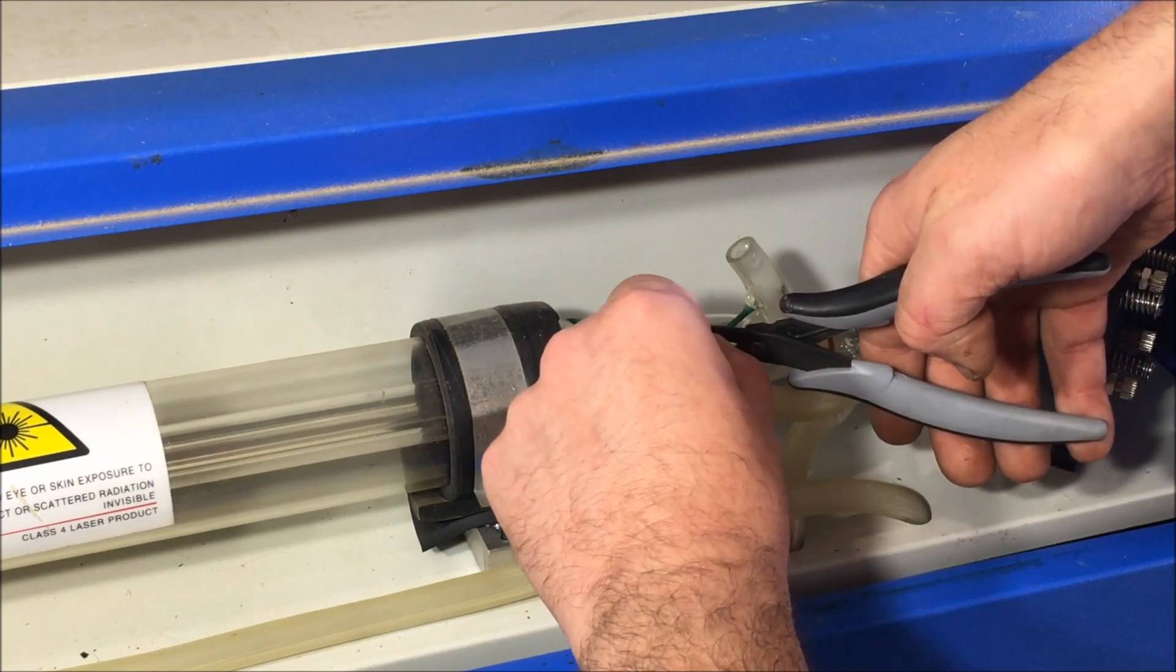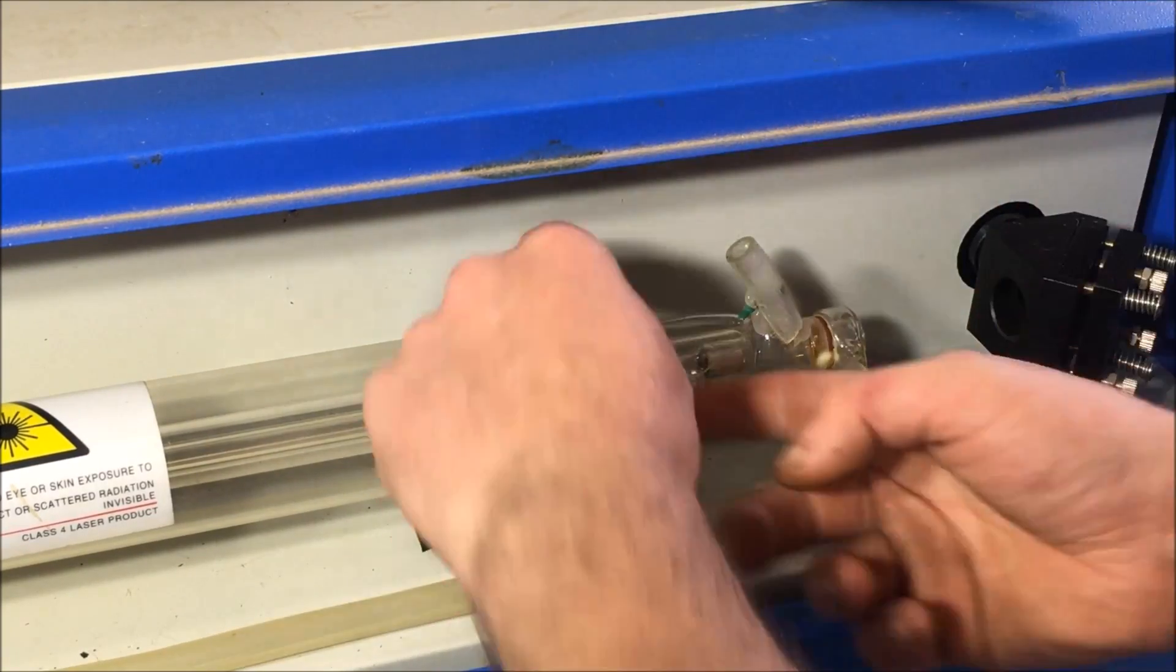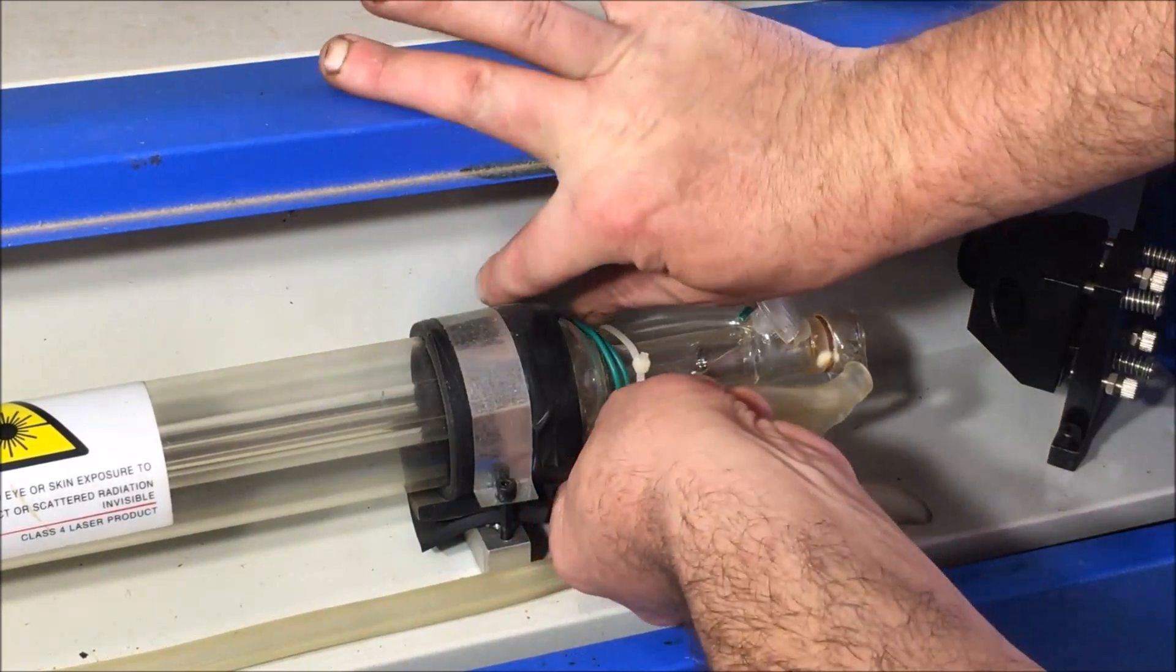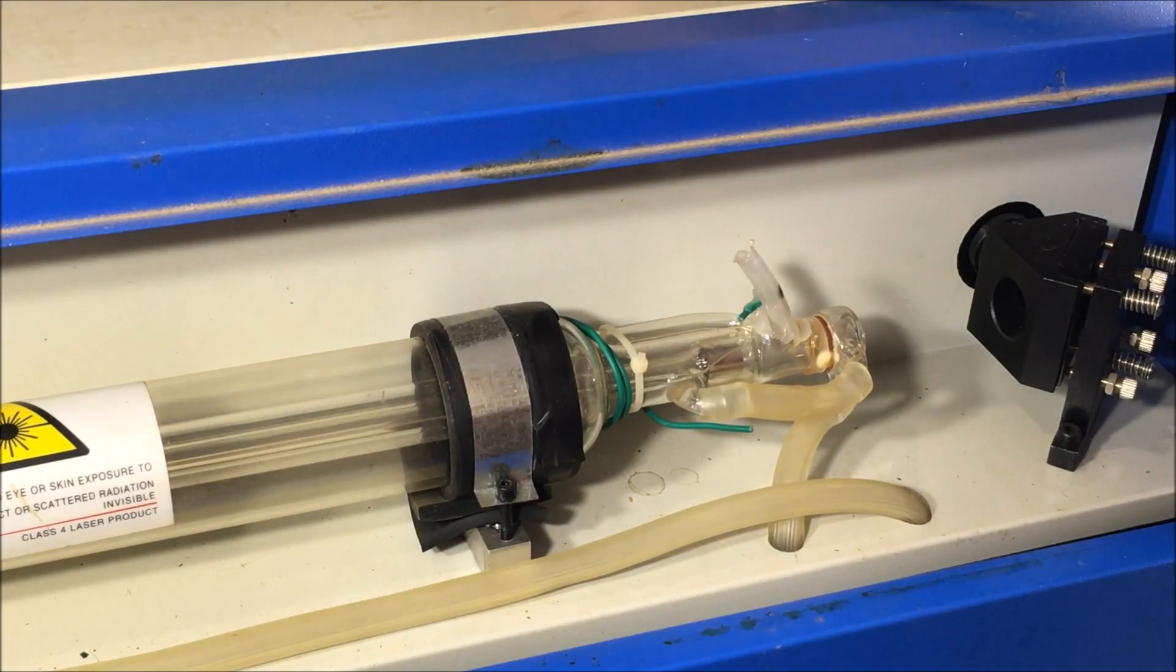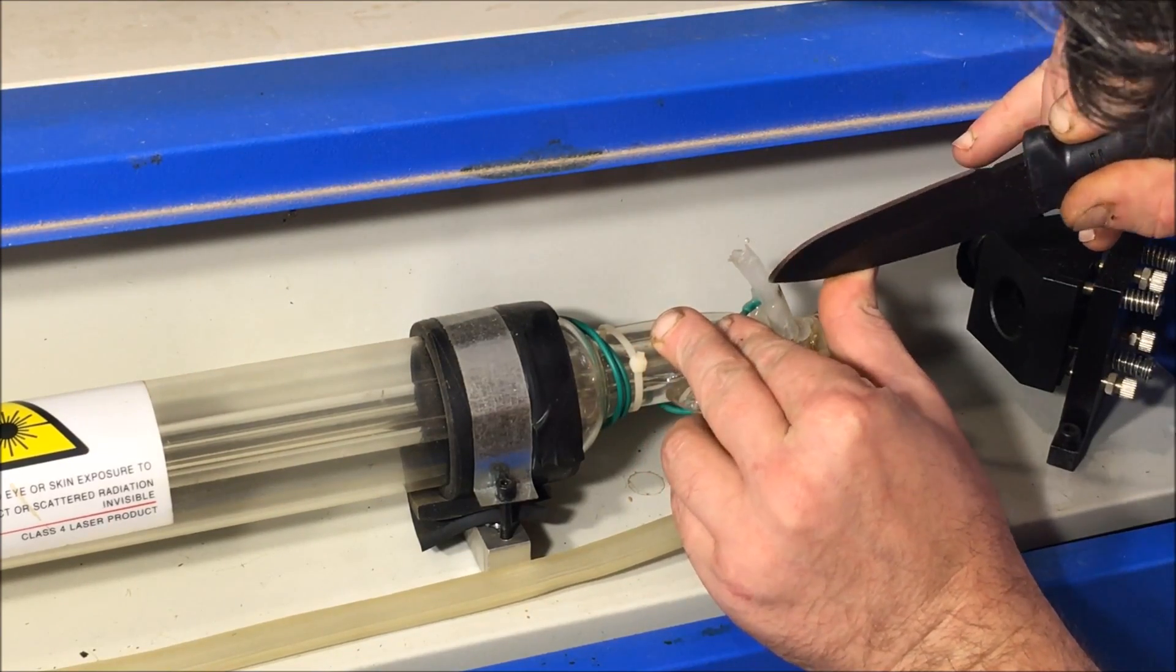I'll just snip this off. I've got a fair excess of wire that I can trim back. This is just some tube that's been placed over there. I'll just cut back this gently because I don't want to damage it.